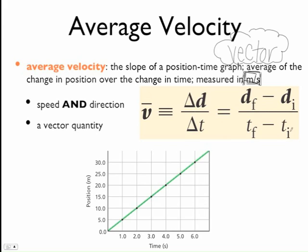And that's your final distance minus your initial distance over your final time minus your initial time. And if you remember, slope, right? Slope is your change in Y over your change in X.